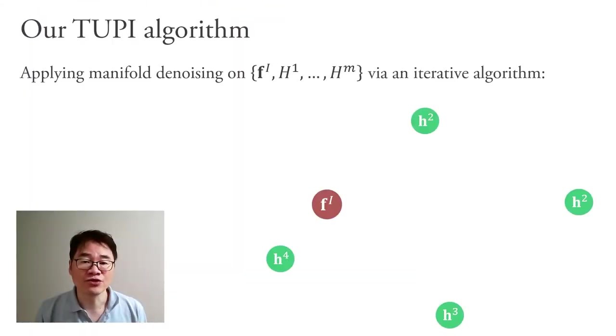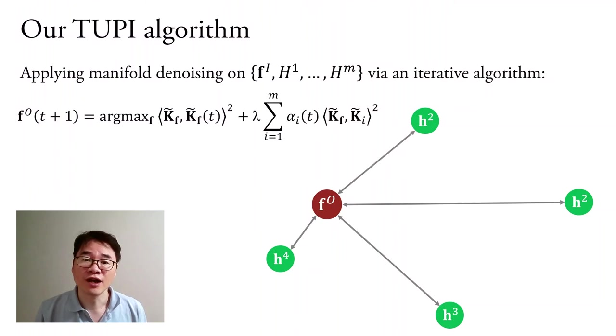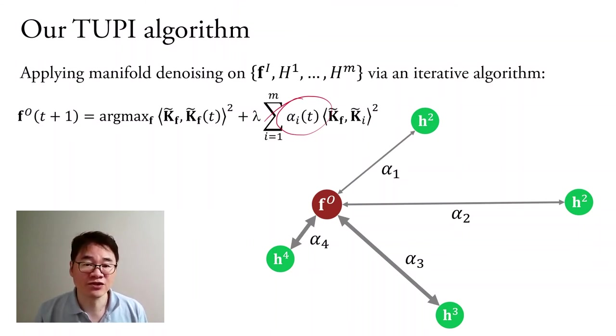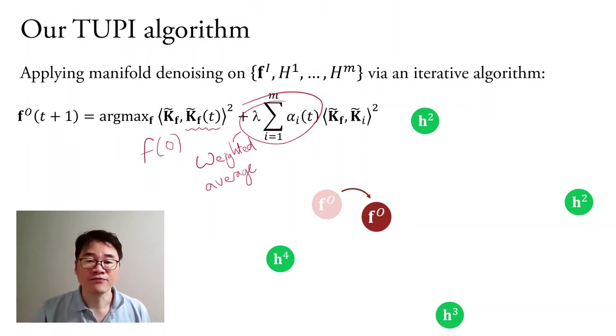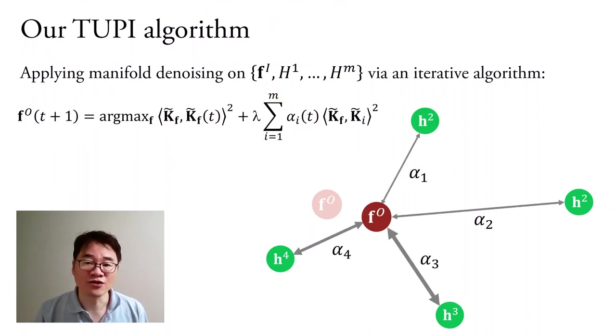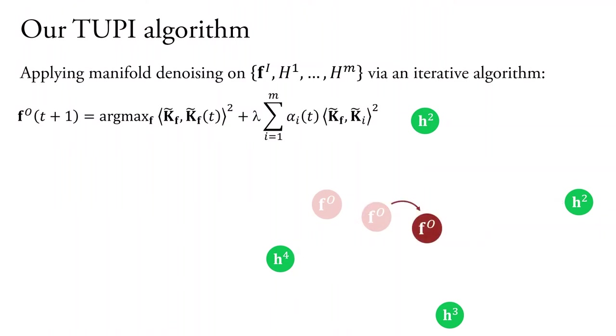Now, we can apply manifold denoising to our predictor and feature manifold via an iterative algorithm. At t0, the predictor estimate is equal to the initial predictor. For each t plus 1, our algorithm iteratively enforces the similarity with respect to the kernel matrices constructed from the predictor F and the privileged features. The similarity between f0 and the privileged features are measured based on their HSIC values. The magnitude of the corresponding parameter alpha is directly proportional to the corresponding HSIC values. Stronger statistically dependent features are assigned with stronger weights. Then, f at t plus 1 is obtained as a weighted average of f at t0 and their privileged features. Repeating this process tends to ignore irrelevant features as they are assigned with smaller weights.